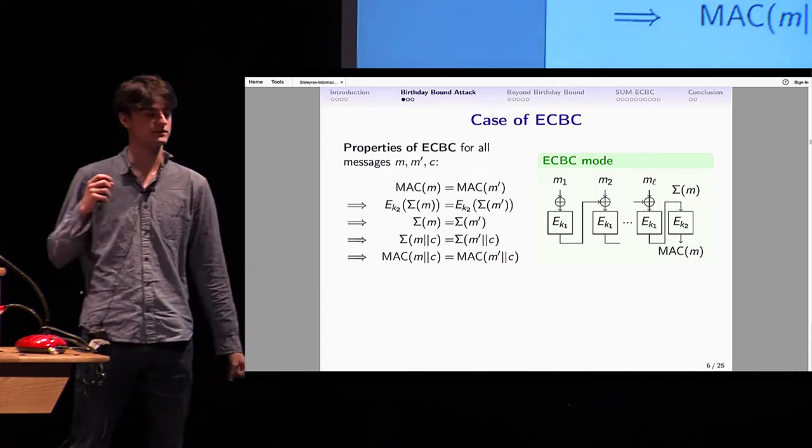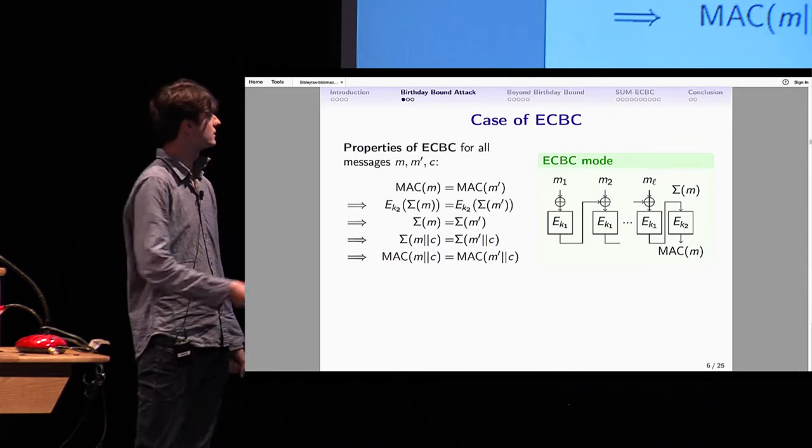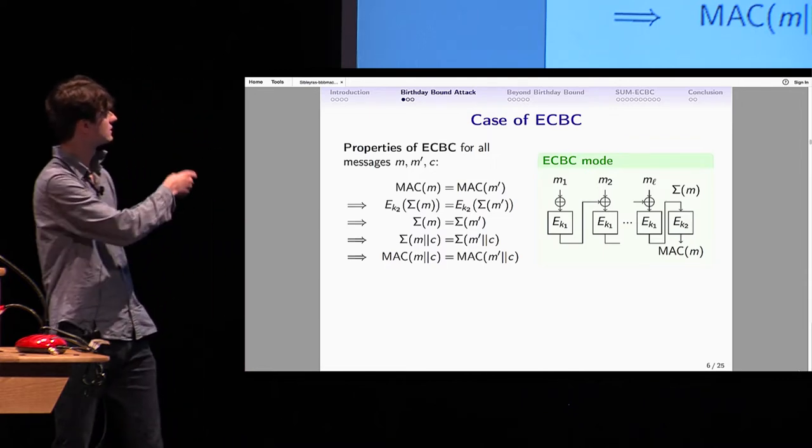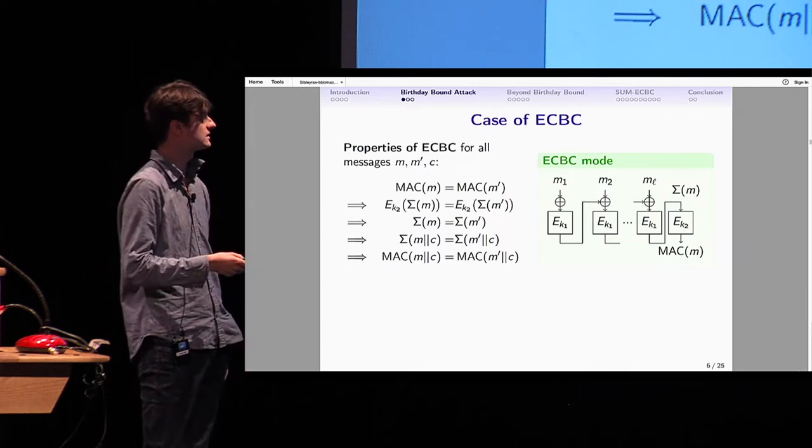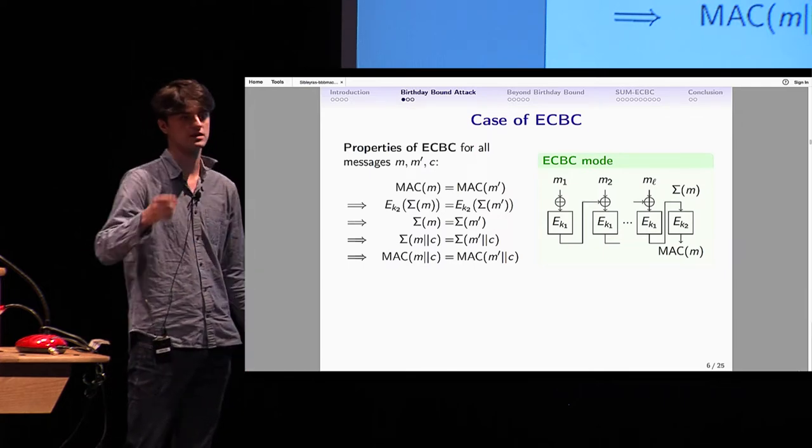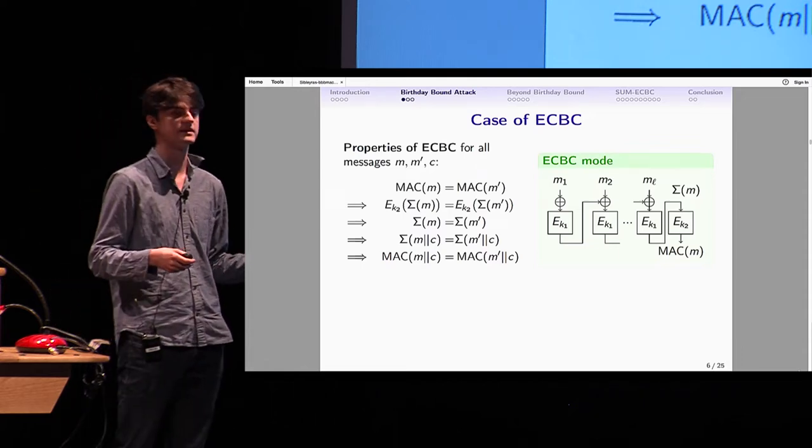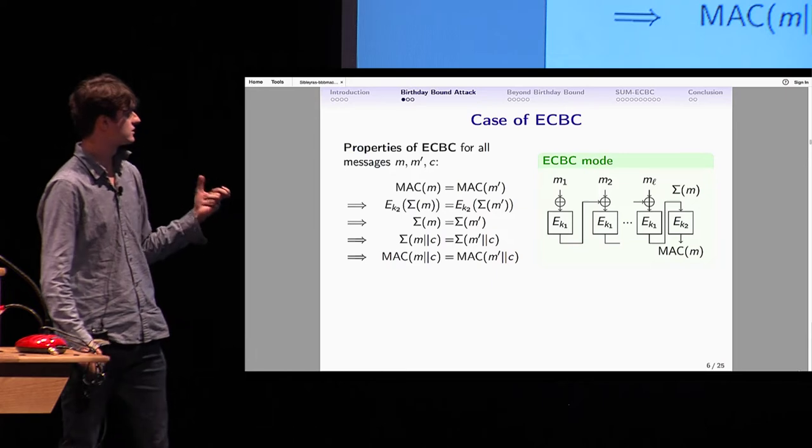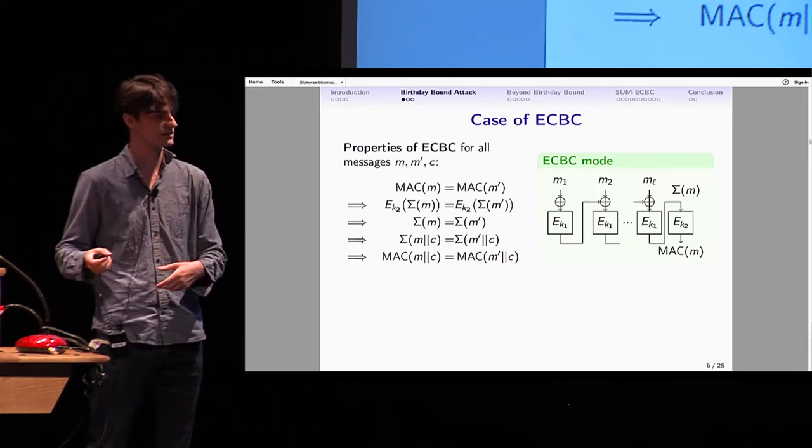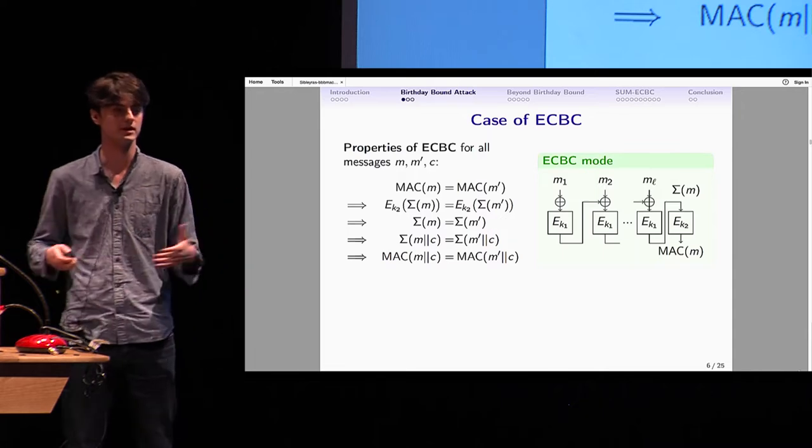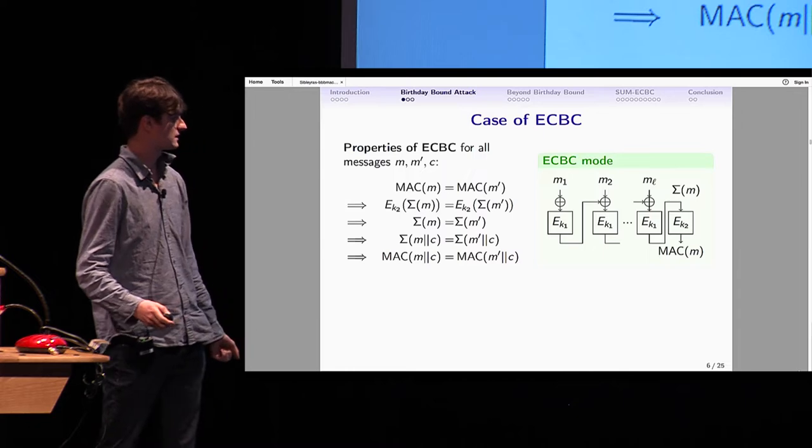If I go back to the case of ECBC, when you observe a collision in the MAC for two different messages, because the block cipher is just a permutation, it means you have a collision on sigma, the internal state. If you have a collision on all internal states, whatever suffix you add, you'll still have a collision in the internal state. Therefore, you can predict that the MAC will still be equal whatever you add as a suffix.